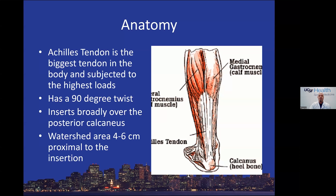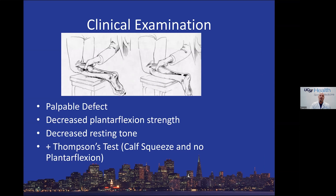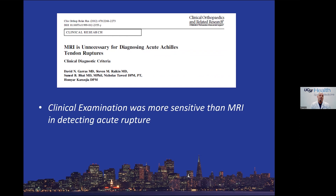The Thompson test is one of the best clinical exams in all of orthopedics. Squeeze the calf and assess for plantarflexion. In the acute setting it is phenomenal — you can usually feel a palpable defect four to six centimeters from insertion, and these people will have decreased plantarflexion strength. Early on, the Thompson test is actually better than an MRI, saving an expensive test while providing diagnostic certainty. Later on, it becomes less reliable.